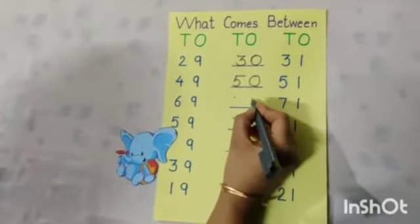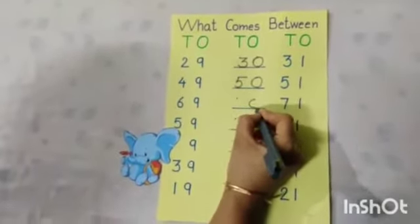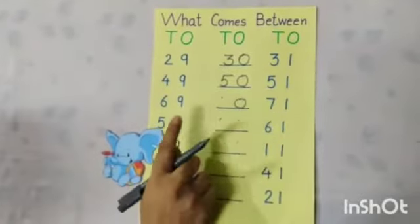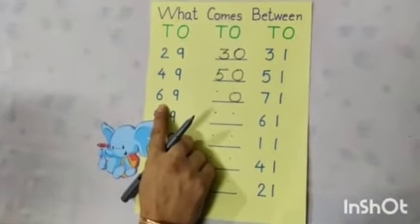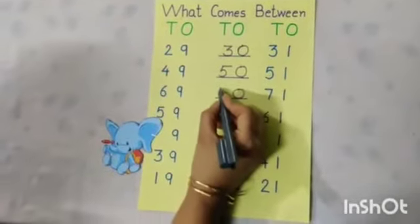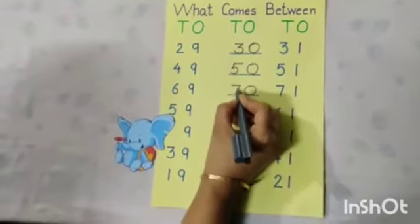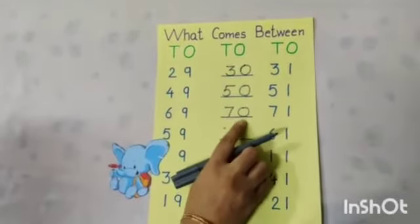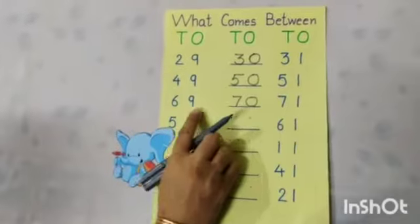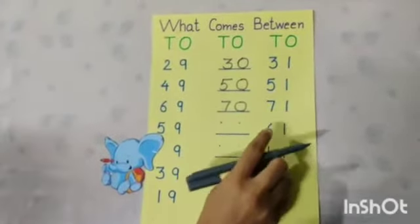Next number, what will come here? Yes, 0, and say bye to 6 and say hello to next number, that is 7. So, 7, 0, 70 comes between 69 to 71.